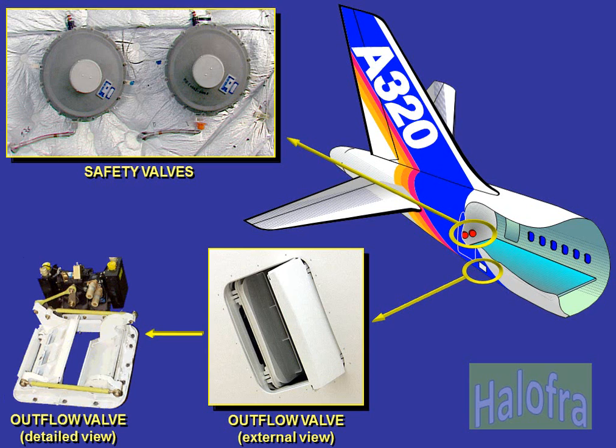To prevent excessive cabin differential pressure, negative or positive, two safety valves are installed on the pressure bulkhead at the rear of the cabin.